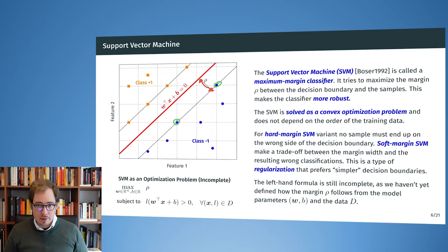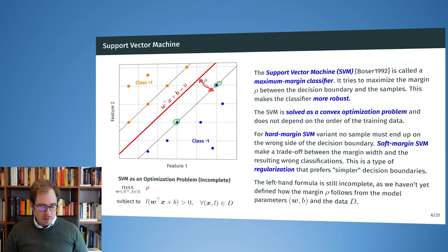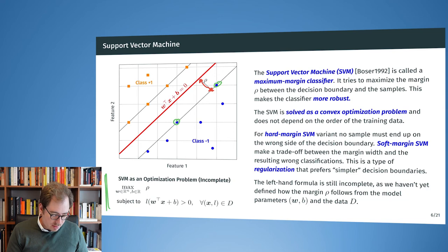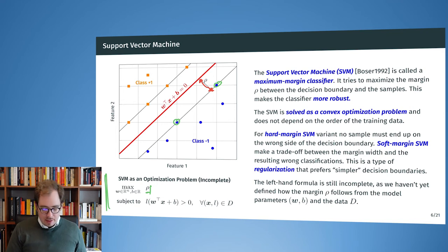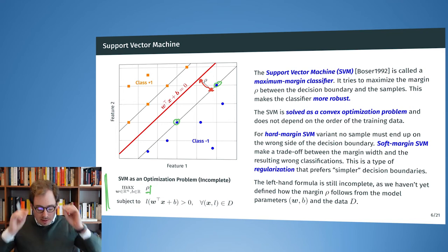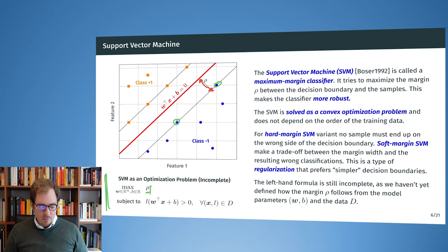For this exposition we only consider the hard margin SVM. The formula on the left-hand side refers to the distance between the classification boundary and the samples rho, but it is still incomplete — it does not make explicit how rho, the training examples, and the weights w inter-relate. We will now develop this further to arrive at an optimization problem we can feed into the algorithms developed in previous lectures.